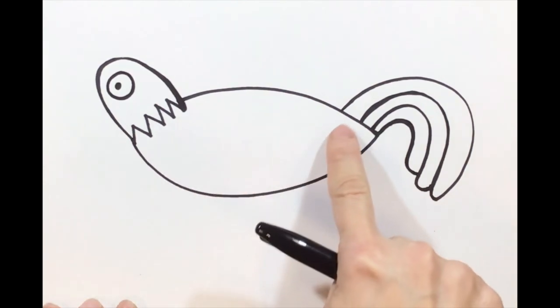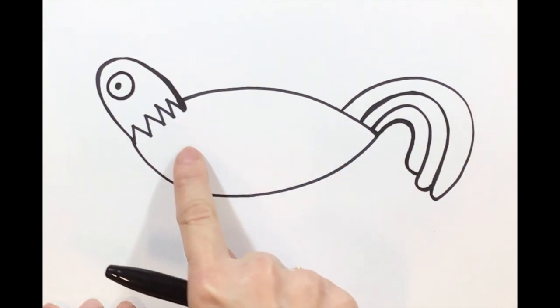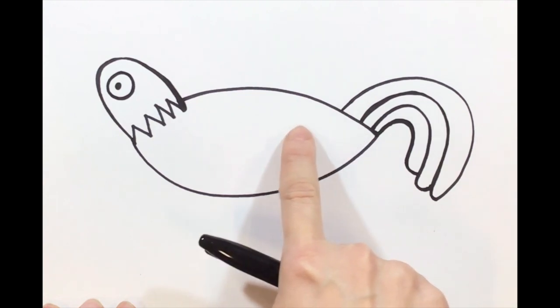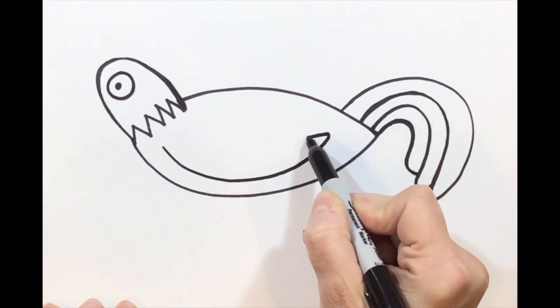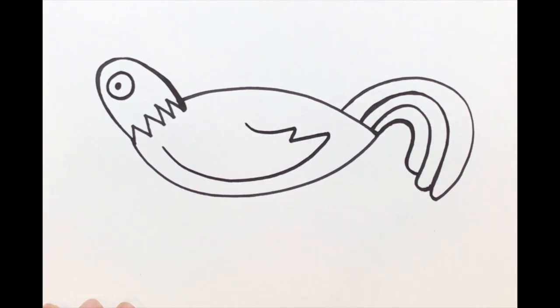Step number seven, we're going to create the wing. So we're going to make a curved line down that scoops up a little and then creates the wing.